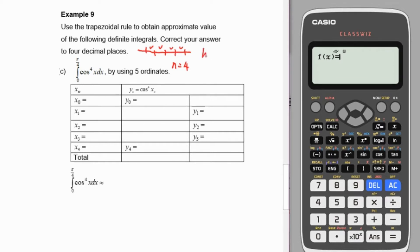The first step is to find the height of the trapezium, which equals the upper limit π/4 minus the lower limit 0, divided by 4 strips of trapezium, which equals π/16.